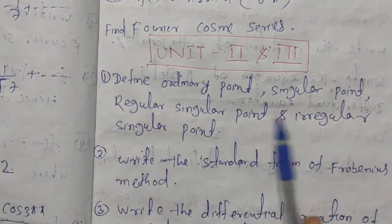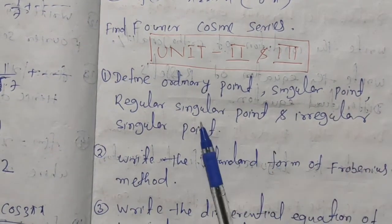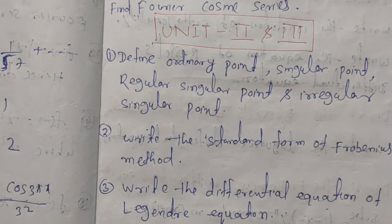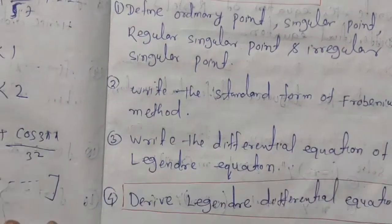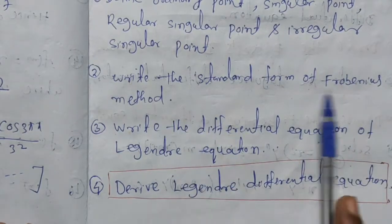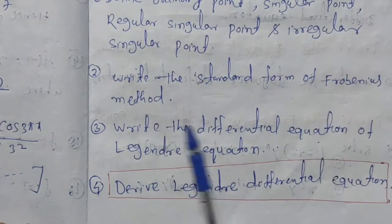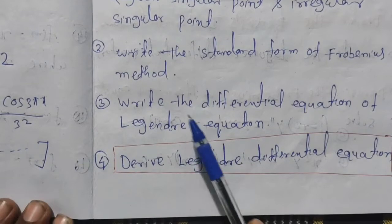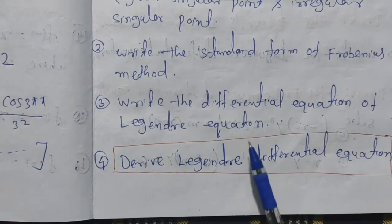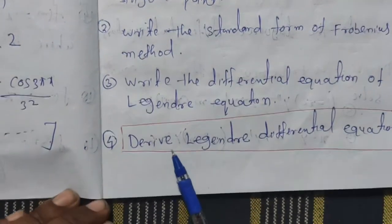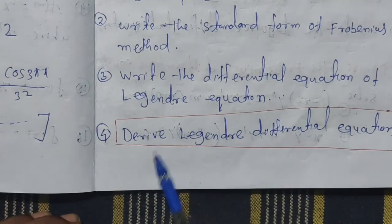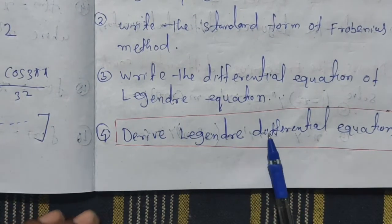Define ordinary point, singular point, irregular singular point. Write the standard form of the Frobenius method. Write the differential equation of the Legendre equation. Derive the Legendre equation — this is a long question with complete solution derivation.